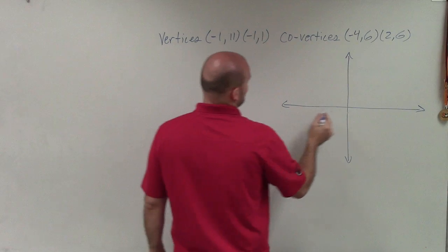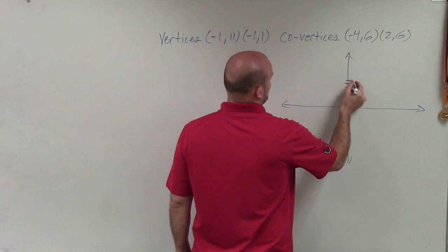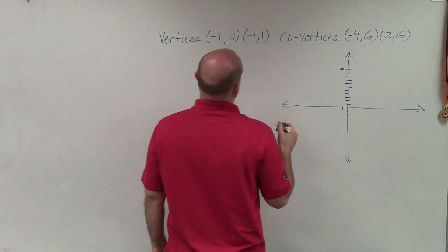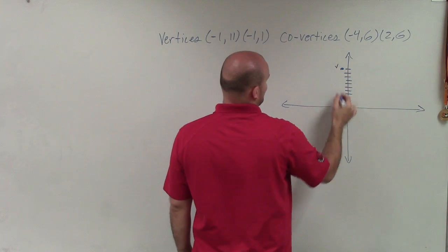So when plotting my points, I have (-1, 11) and (-1, 1). So those are my two vertices.